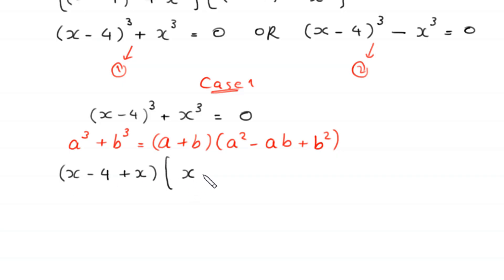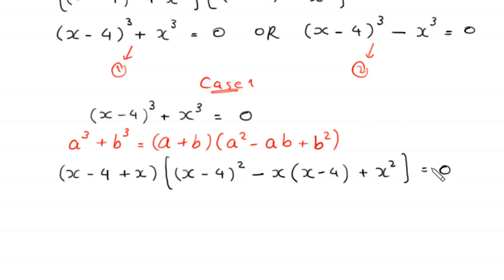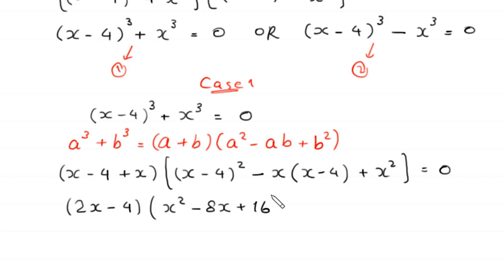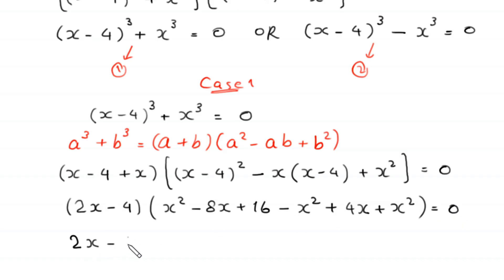This expression will become: (x minus 4 plus x) times [(x minus 4) squared minus x(x minus 4) plus x squared] is equal to 0. This x plus x will become (2x minus 4). Expanding: (x minus 4) squared becomes x squared minus 8x plus 16, minus x squared plus 4x, plus x squared.